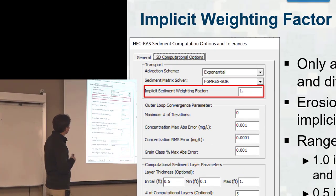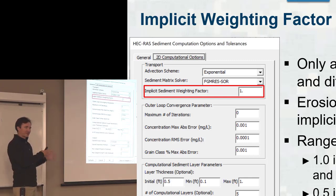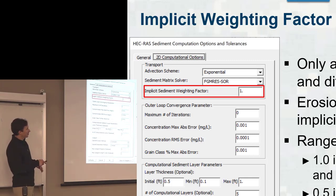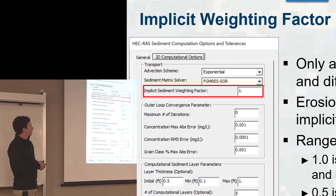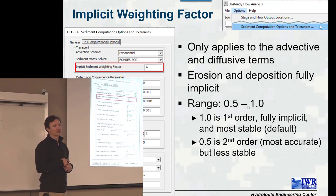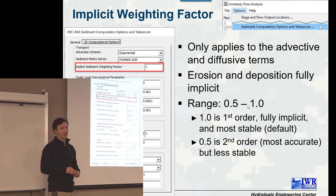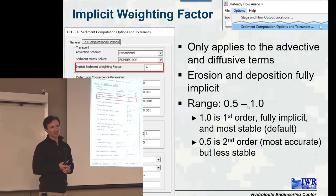The implicit weighting factor applies to the transport advective and diffusive fluxes. It doesn't apply to erosion and deposition — those are treated fully implicitly. Using 0.5 is going to be more accurate with less numerical diffusion, and 1 is going to be the most stable, most implicit. So if you have a really high resolution mesh and want to reduce numerical diffusion, you could reduce this to 0.5. Otherwise, I wouldn't worry about it — most of our grids are fairly coarse and we're looking at things at large scale, so it's not a big deal.